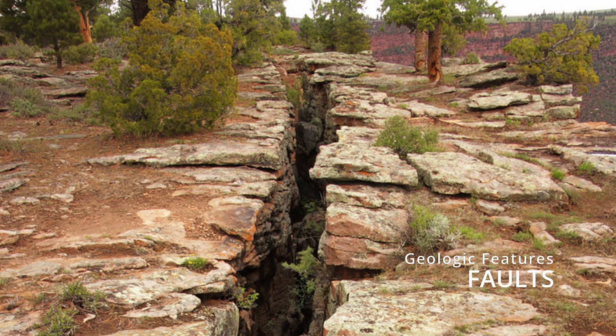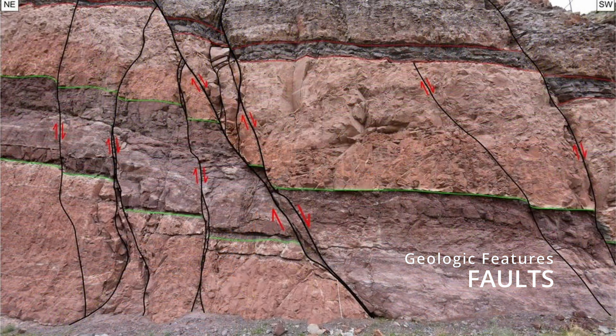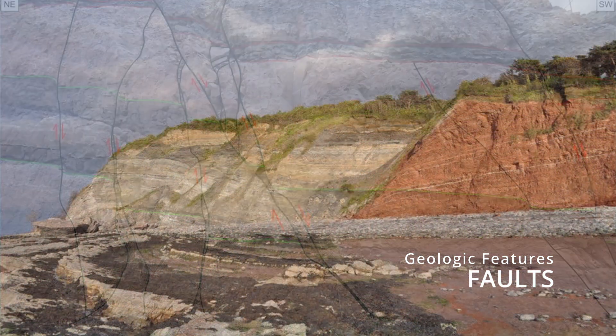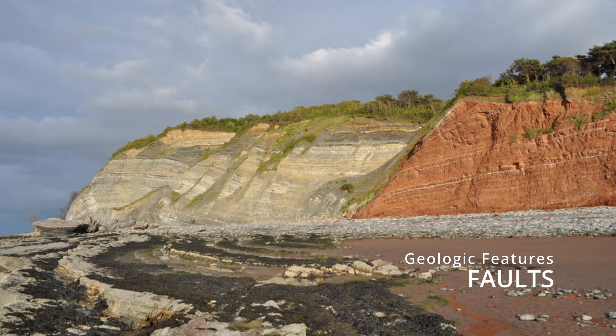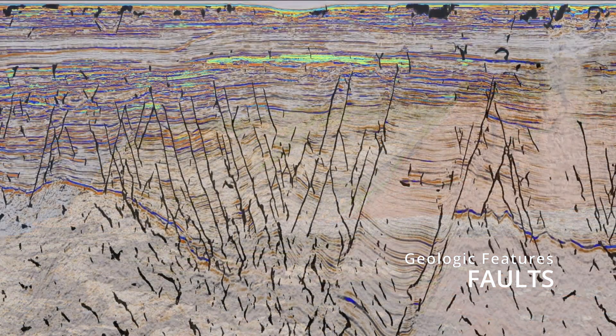Faults are fractures in a rock mass that has experienced movement. They can lead to differences in elevation at the ground surface, differential erosion, contrasting visual appearance, and weaker bearing capacity of the fault material compared to the parent rock.